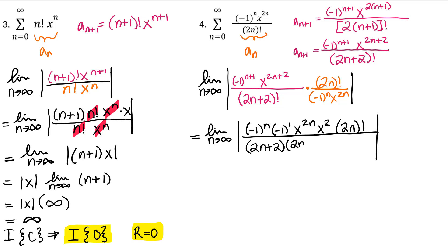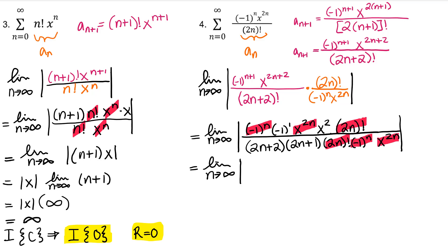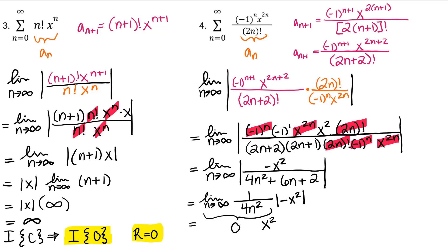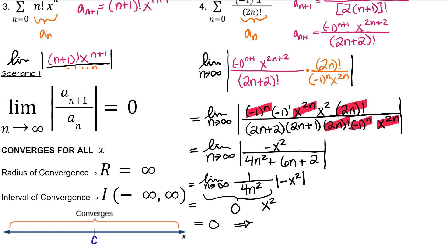For the next example, we'll expand the factorial. After (2n+2), it will be (2n+1), and then (2n), and I'll stop there. Time to reduce. Because n is approaching positive infinity, I only need terms of highest degree, and I don't need the absolute value. This result is 0. Absolute value of a negative is positive, so we get |x|^2, which is x^2, but either way, when our result is 0, our interval of convergence is (−∞, ∞), making our radius of convergence infinity.